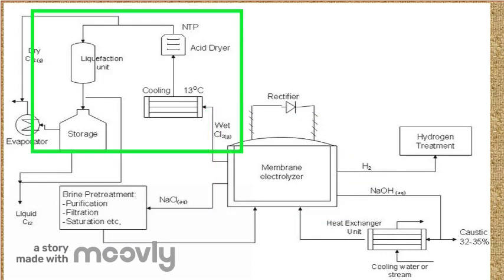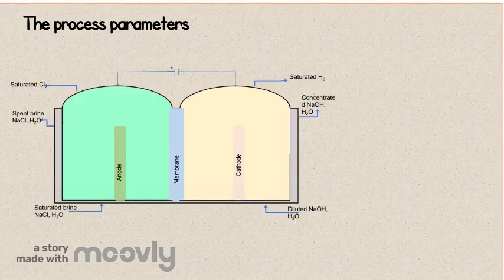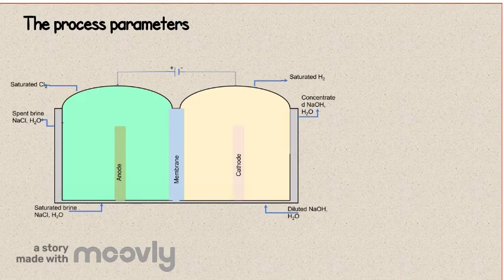The chlorine gas is cooled and liquefied through a series of compression and cooling stages before being stored in tanks. There are several process parameters that can affect the performance of the membrane.